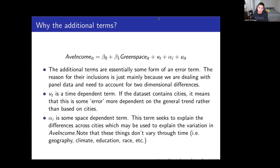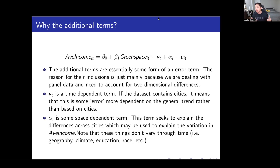Alpha-I, on the other hand, is some space-dependent or cross-sectional dimension-dependent term that seeks to explain the differences across cities which may be used to explain average income. Note that these things do not vary throughout time. Consider things like demographics, geography, climate, education, and race composition — these vary across cities. For example, London's climate would be very different from a city like Nairobi. Those city-specific factors don't really change throughout time — they're space-related, specific to a particular city.